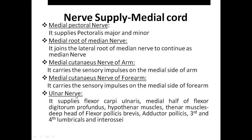The ulnar nerve supplies flexor carpi ulnaris and the medial half of flexor digitorum profundus — these are the muscles of the forearm. Then comes the hypothenar muscles and the thenar muscles, which include the deep head of flexor pollicis brevis, adductor pollicis, the third and fourth lumbricals, and the palmar and dorsal interossei.